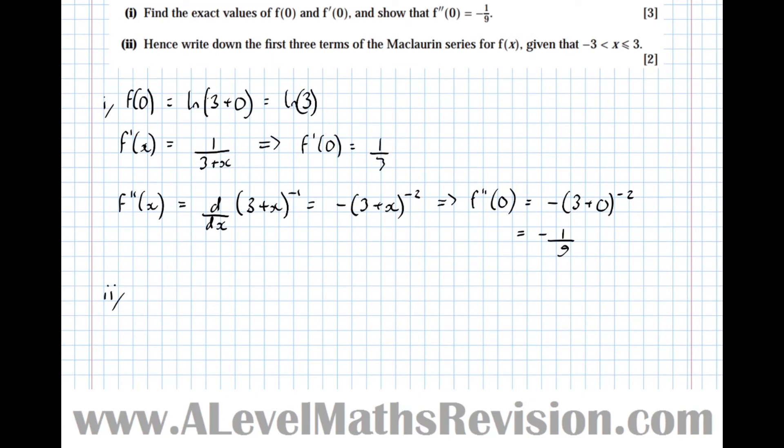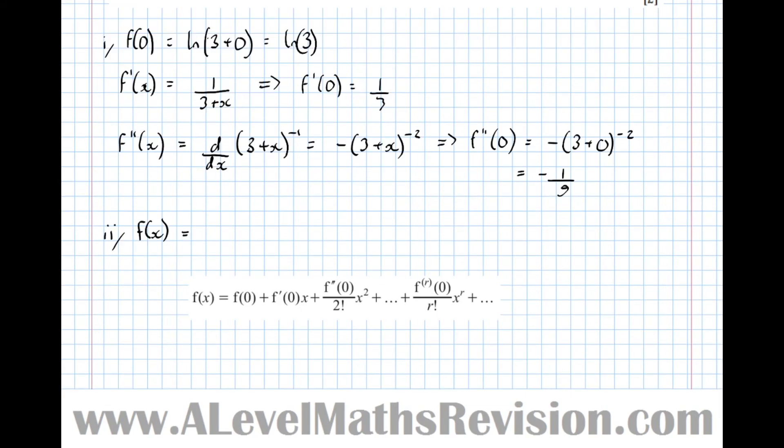So now part 2. Hence, write down the first three terms of the Maclaurin series of f of x, given that x can lie between minus 3 and 3. Now, the expansion is only valid for values between minus 3 and 3 for reasons which we won't go into now. So hence, write down the first three terms. So f of x equals, just to remind us of the formula. f of x equals f of 0, which is log 3, plus f dash 0 x, so a third x, f double dash of 0 x squared over 2 factorial. So minus 1 9th over 2 factorial is minus 1 18th x squared. And there's the answer.